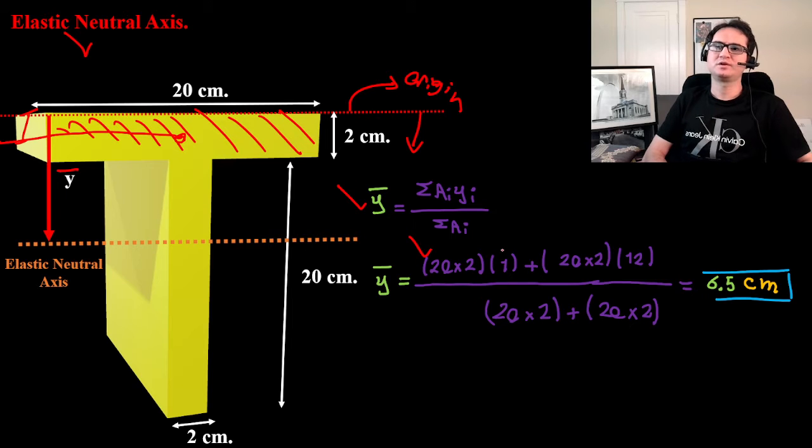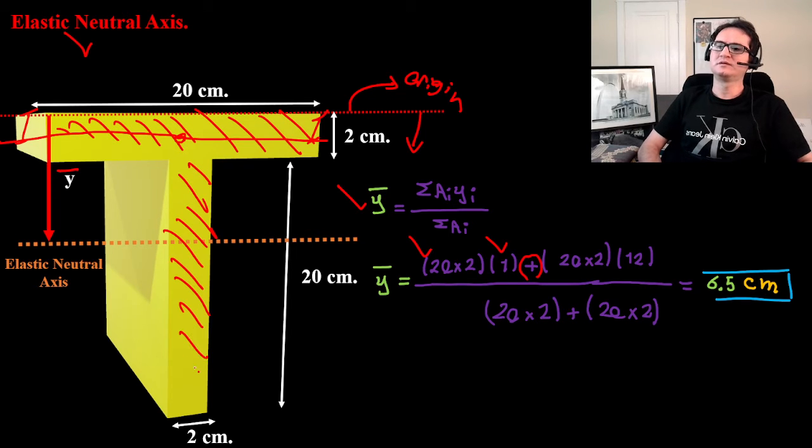...times 10 plus 2, which is 12 from the origin. So that's 20 times 2 times centroid, which is 12 from the origin, over the total area.